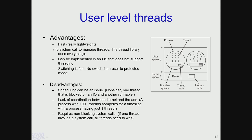Note that this thread table contains information which is local to only the threads in this particular process. For another process, it would have its own runtime system and its own thread table. The number of entries in the thread table is equal to the number of threads that are executing. Also note that the thread table, sometimes known as the TCB or thread control block, is different from the process control block which is stored in the kernel space. Besides having far fewer entries, it is also in user space.